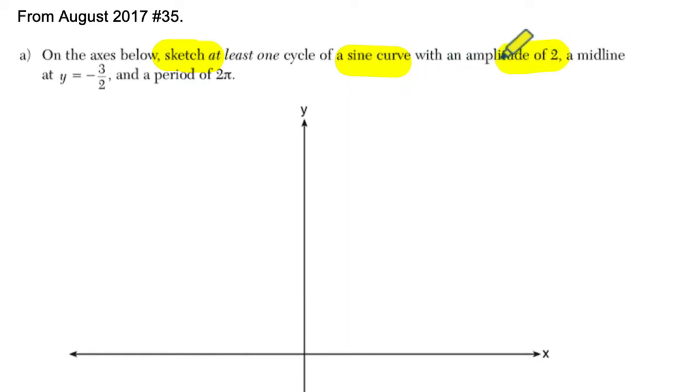The amplitude is 2, so that's the distance from the midline. A midline at y equals negative 3 halves, or negative 1.5, that's the literal middle or average of the function, and a period of 2 pi. So it's going to take 2 pi radians to complete one cycle.